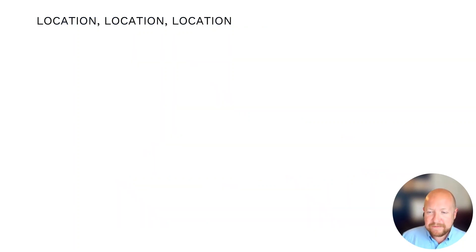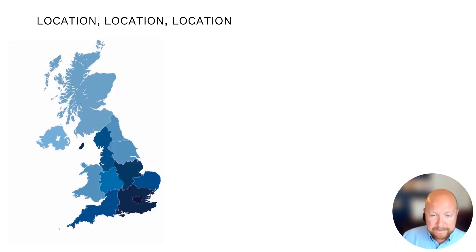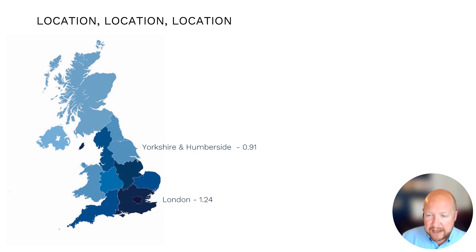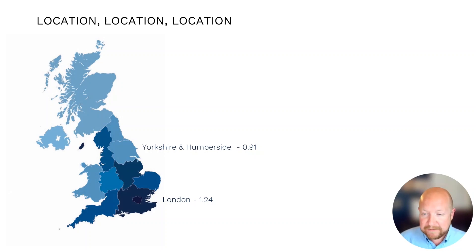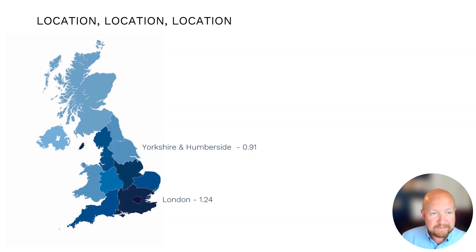Another way in which the environment we are working in can impact costs is, of course, where we are in the country. BCIS produces location factors which can be used to adjust project estimates according to where the work is actually taking place within the UK. These figures, calculated for our 24 estimating guides, show that there can be a significant difference between the average cost in different areas of the UK. But even within a geographical location, the specific setting of the project has a huge influence on costs.